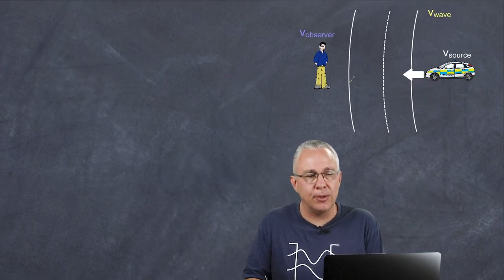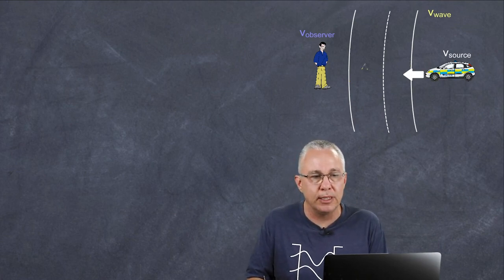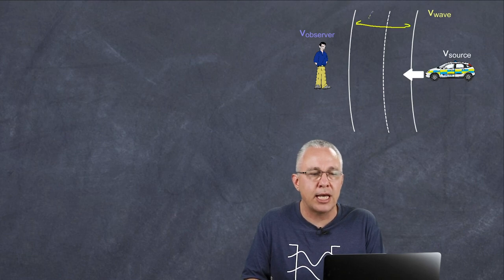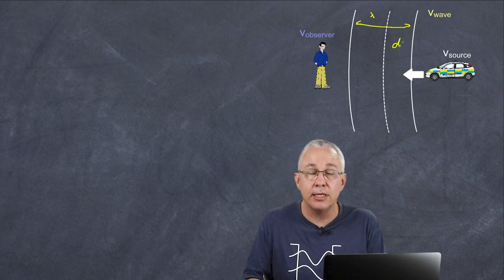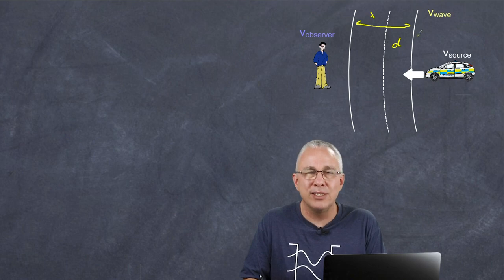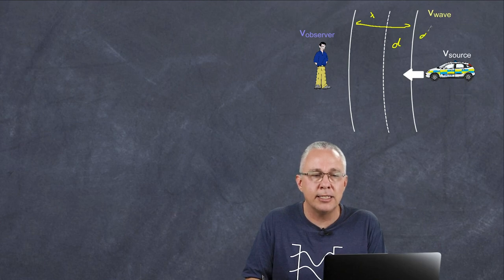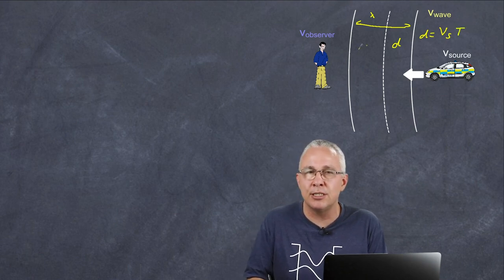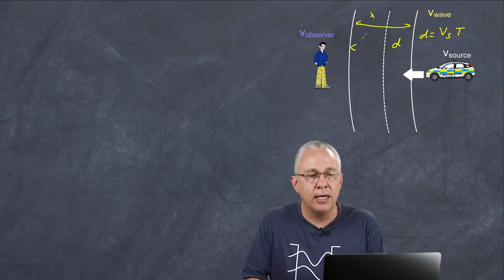In our first example, we're dealing with only the velocity of the source being the one that's actually moving — the observer is stationary. We annotate the distance across here, which is our wavelength between the two crests. But of course, the source is moving a certain distance. That distance is equal to simply the velocity multiplied by time: the velocity of the source (subscript S) multiplied by the period T. So this distance is actually the wavelength that's perceived by the observer.